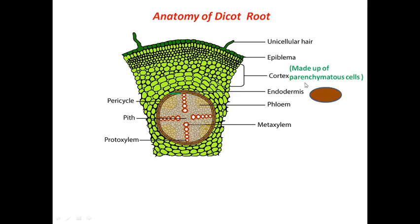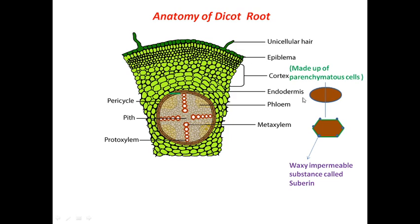What is special about the endodermis is that it is made up of compactly arranged barrel-shaped cells. If we cut a section of these barrel-shaped cells, we see polygonal cells which have thickenings on the radial walls. This thickening is made up of a waxy substance called suberin, which is impermeable to water. As a result, several strips are formed in these barrel-shaped cells, called casparian strips — shown here in green.